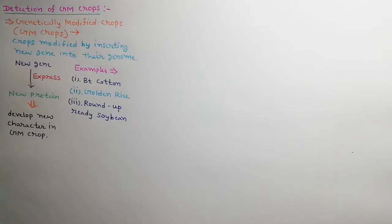Genetically modified crops or GM crops are those crops in which their genome is modified by inserting a new gene. This new gene expresses and gives rise to a new protein, which develops new characteristics in the GM crop.